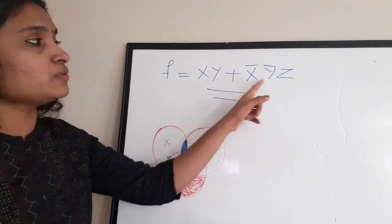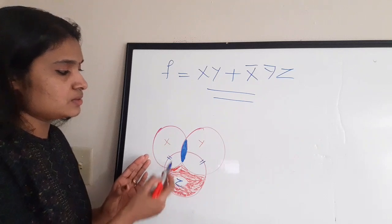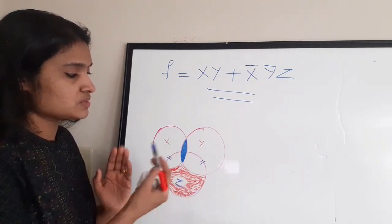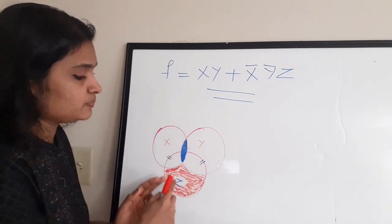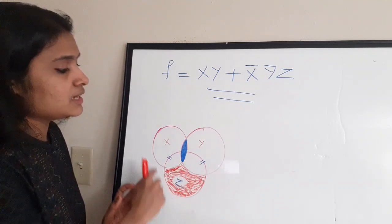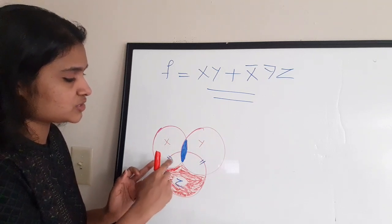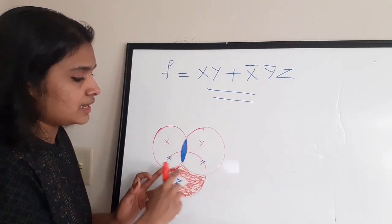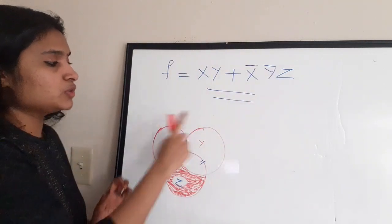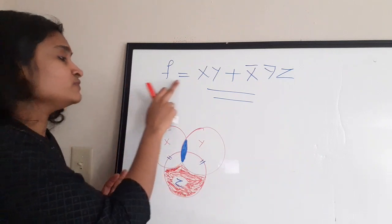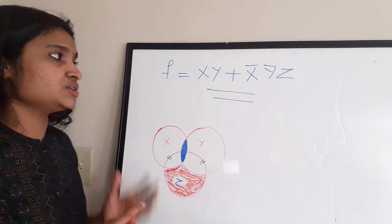Therefore the complete Boolean expression for the Venn diagram is: F = XY + X̄ȲZ. The first term XY represents the intersection of X and Y; the second term X̄ȲZ represents the exclusive part of Z. This is the logical expression for the given Venn diagram.